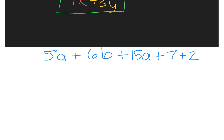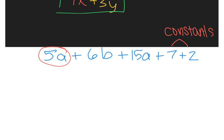Here I have five a plus six b plus 15 a plus seven plus two. Notice how I have some terms that have variables — five a, six b, 15 a — and then I have two terms at the end, the seven and the two, that don't have any variables. These are what we call constants. Constants are like terms, so I can combine those together. Looking at this, I want to figure out what I can combine: I have five a plus 15 a, and five a plus 15 a equals 20 a.